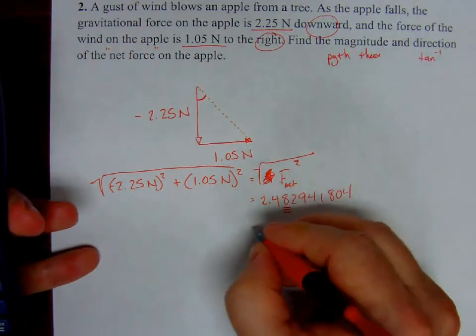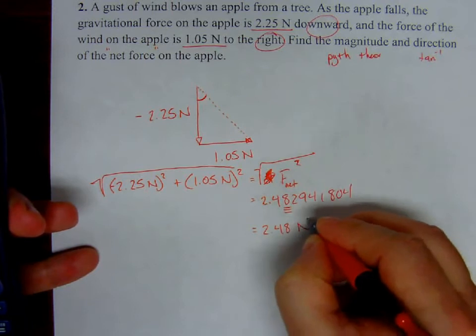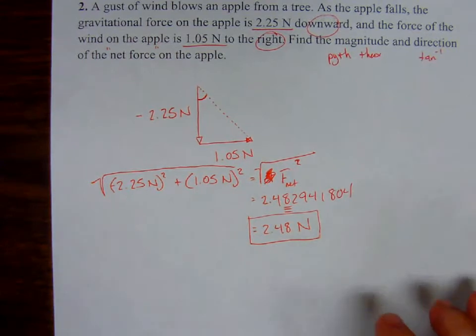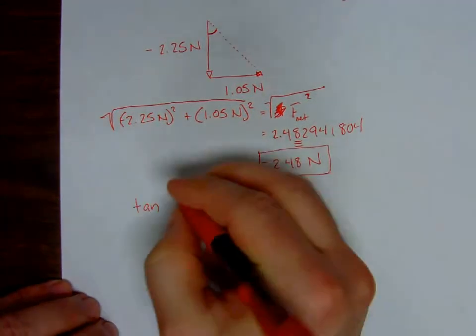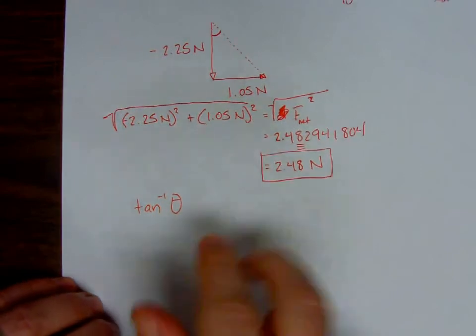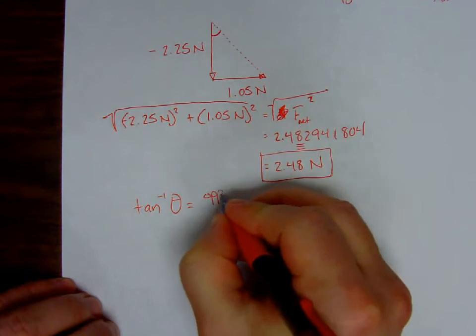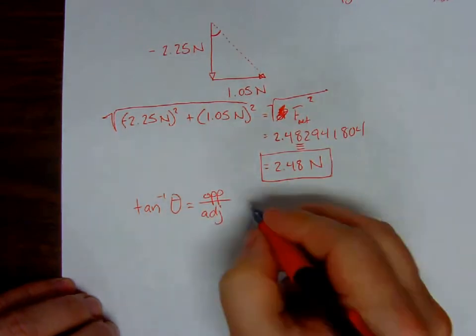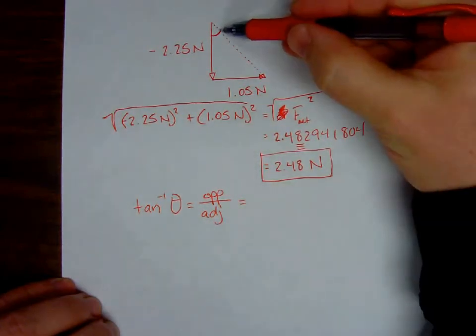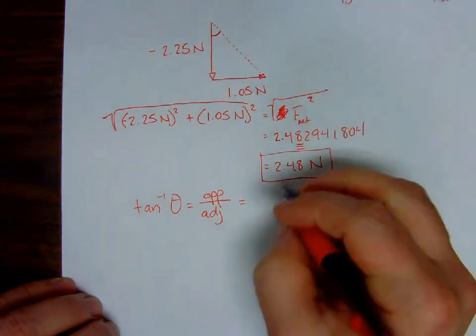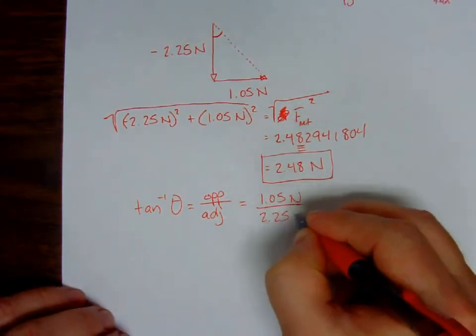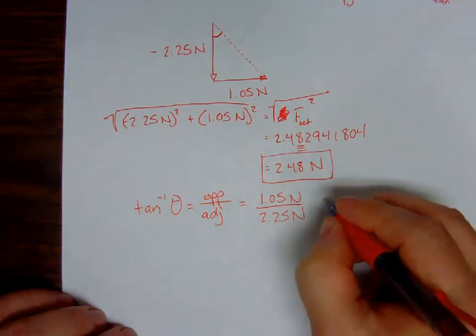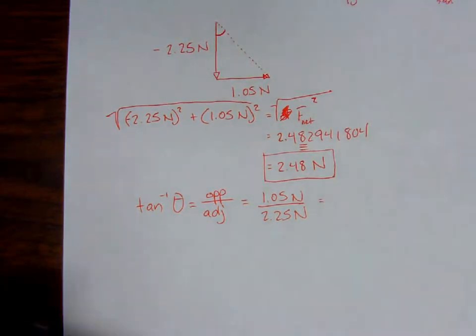And we also need to do the direction. So I'm going to use the inverse tangent to calculate the angle. It's opposite over adjacent. Looking at my setup here, here's the angle I'm trying to find. Opposite is 1.05 newtons and adjacent is 2.25 newtons. When I take the inverse tangent of that, I end up with 25.0 degrees. I only want to report three significant figures, so I'm going to stick with three significant figures.